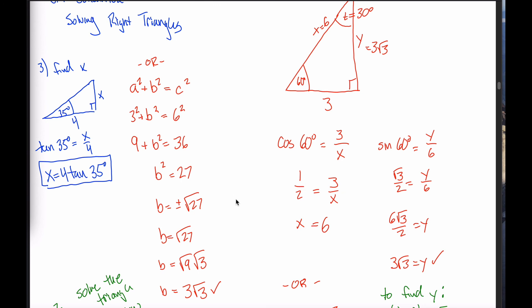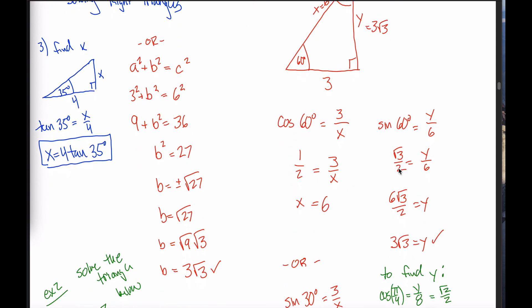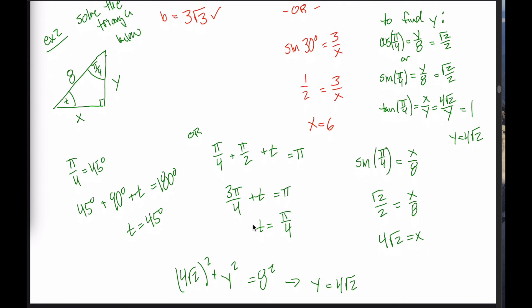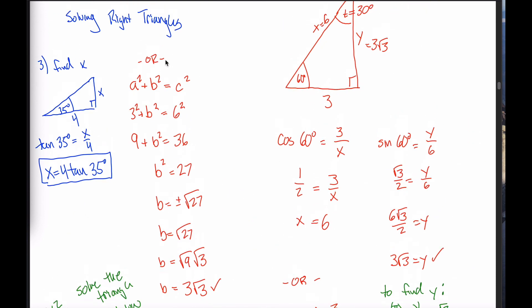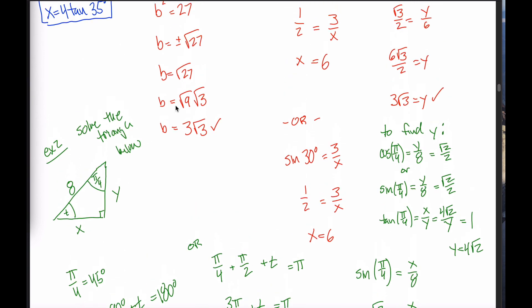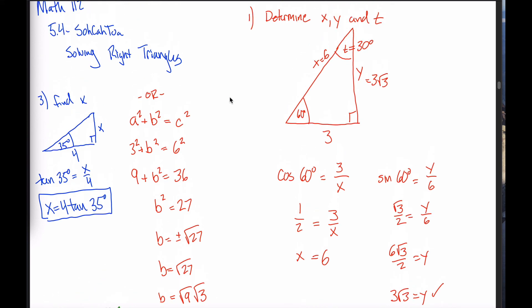What you should get out of this video is the ability to solve a right triangle if you're given one angle and one side, no matter where that angle is and where that side is, using the sine, cosine, and tangent functions. You have a lot of freedom, and the Pythagorean theorem can be really useful. If the given angle is one of the values on your unit circle, you can write answers without any trig functions at all; but if not, leave your answers as expressions.